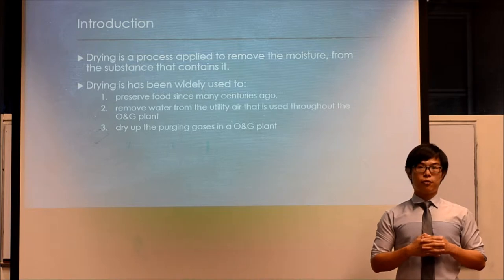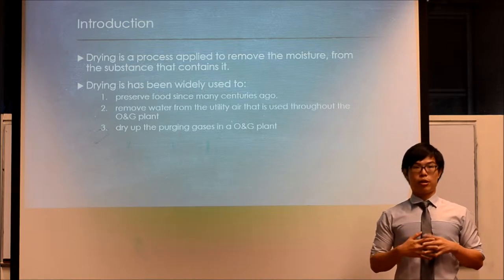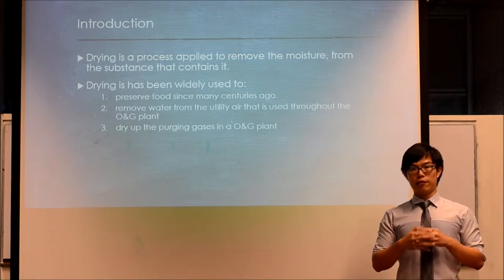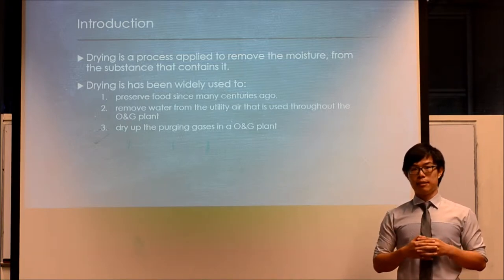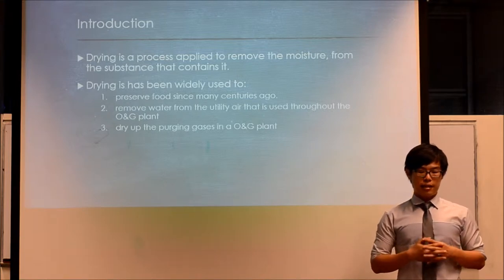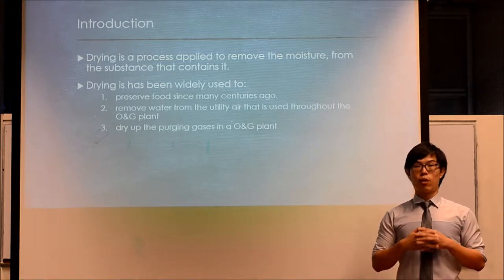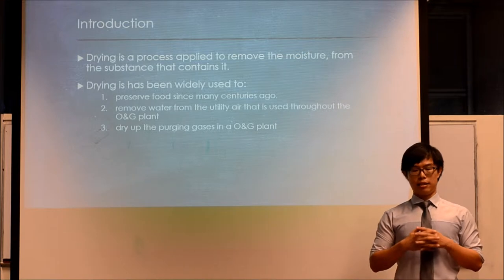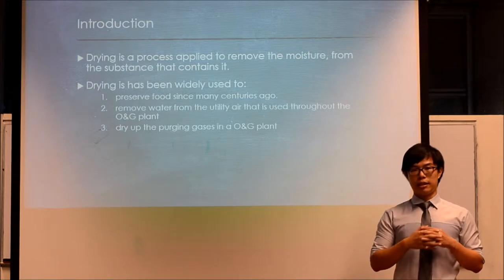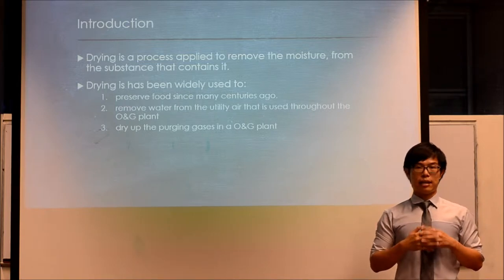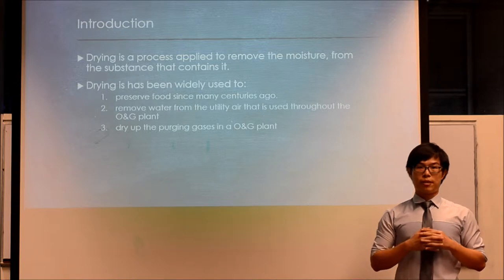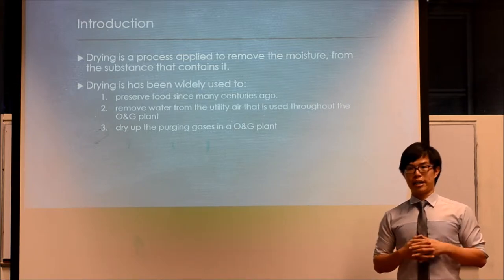Drying has been used to preserve food since many centuries ago. Because drying involves removal of water, the absence of water in food will prevent microorganisms and bacteria from growing, hence preserving the food. Besides, drying is also used to remove water from the utility air used throughout an oil and gas plant, as the presence of water will corrode and damage pipes and equipment. Drying is also used to dry up the purging gas used in an oil and gas plant.